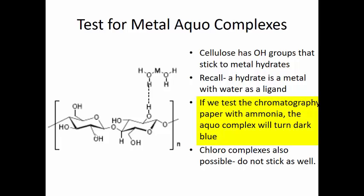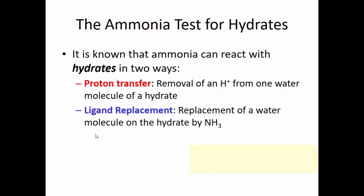If it's not a hydrate, the other possibility in this experiment is that it's a chloro complex, which means it moves up the plate rapidly. Ammonia can react with hydrates in a couple of ways. Before we actually show you the test, let's talk about this. It can react through what's called proton transfer or deprotonation.